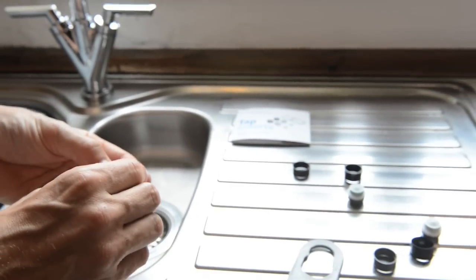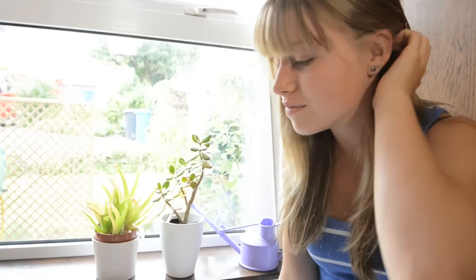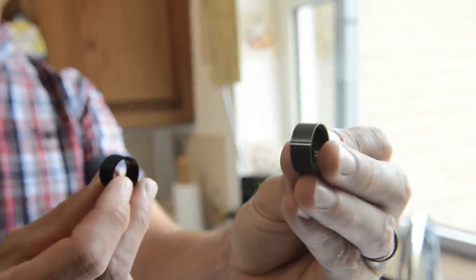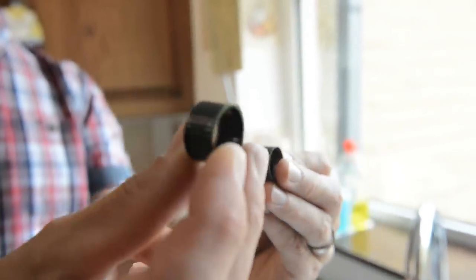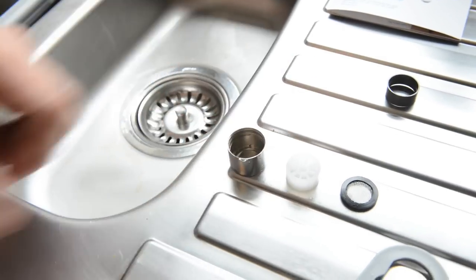Right, we need to take out the rubber ring and put it somewhere safe. Ok, so there's two adapter rings in the pack, a grey one and a black one. We need the black ring because our tap nozzle is smooth inside. If it had a lip inside we'd need the grey one.